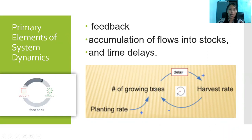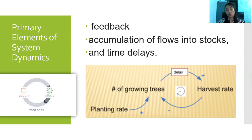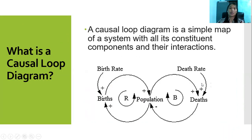For example, growing trees — how long does it take for them to become mature and for us to harvest them? A causal diagram is a simple map of the system with all its constituent components and their interactions.